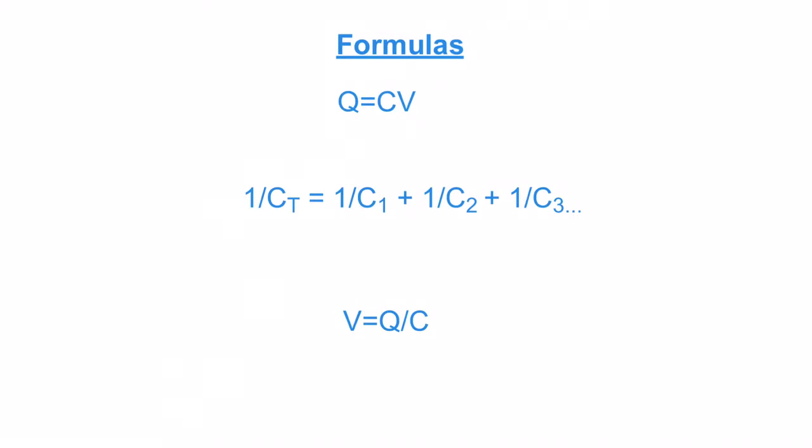The formulas that we're definitely going to be needing - this is a big one for us. This is Q equals C times V. The Q is your charge measured in coulombs, C is your capacitance measured in farads, and V is your voltage. We're going to transpose this to figure out what our voltage is.